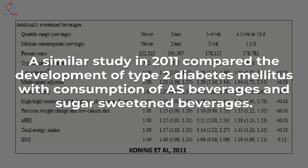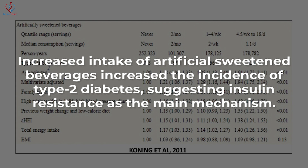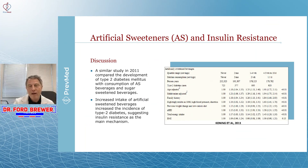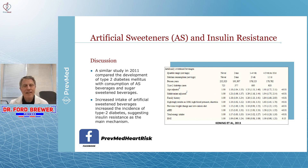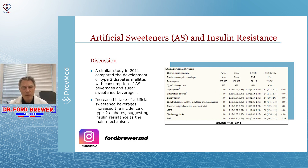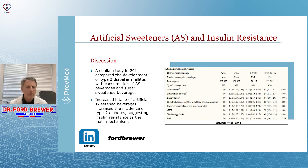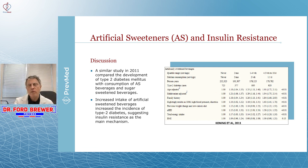A similar study was done in 2011. They compared the development of type 2 diabetes with consumption of artificial sweetener beverages versus sugar-sweetened beverages. The increased intake of artificial sweetened beverages increased the incidence of type 2 diabetes, suggesting insulin resistance as the obvious mechanism — adding more smoke around this topic. So at the end of the day, do I think artificial sweeteners cause insulin resistance? Yes. But how much and how big a risk factor are they? I have no doubt there is some increased risk, but I doubt how much that risk plays into the picture compared to far more common and far bigger risks that we see.